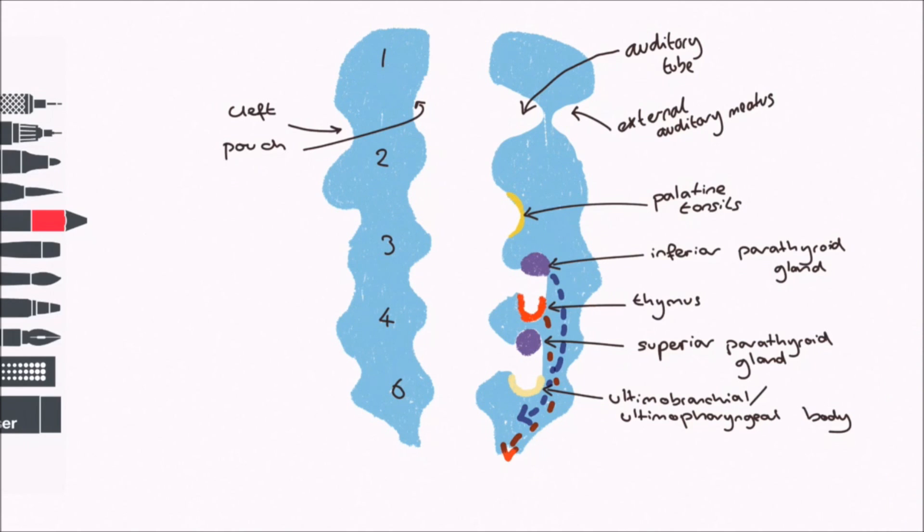But what about the second to fourth pharyngeal clefts on the outside? Well, the second pharyngeal arch, also known as the hyoid arch as it goes on to form some of the hyoid bone, proliferates to overlap the third and fourth arches, to merge with an area called the epicardial ridge lower down the neck. The remaining cavity is termed the cervical sinus and usually disappears as development continues.